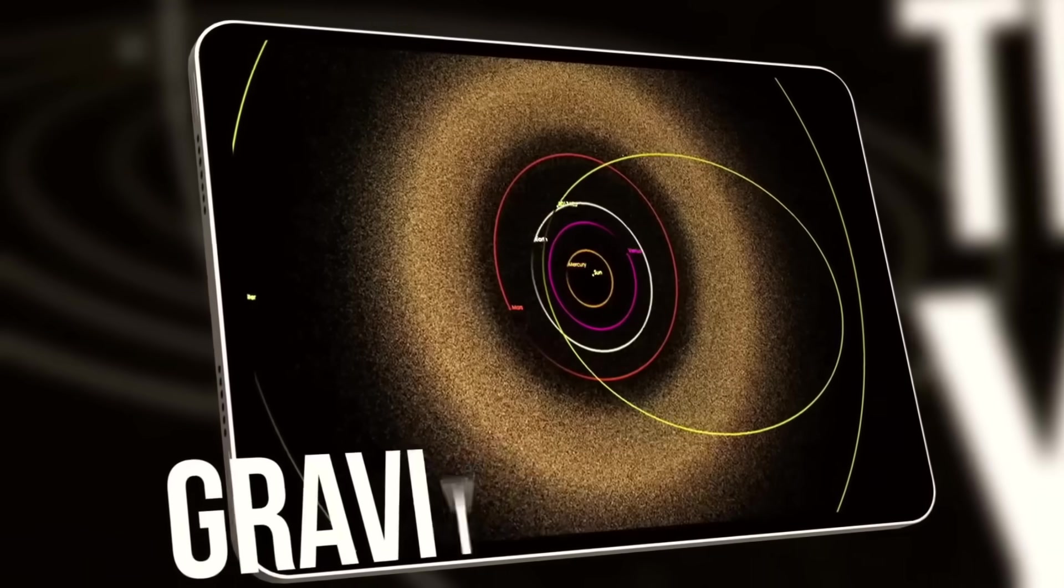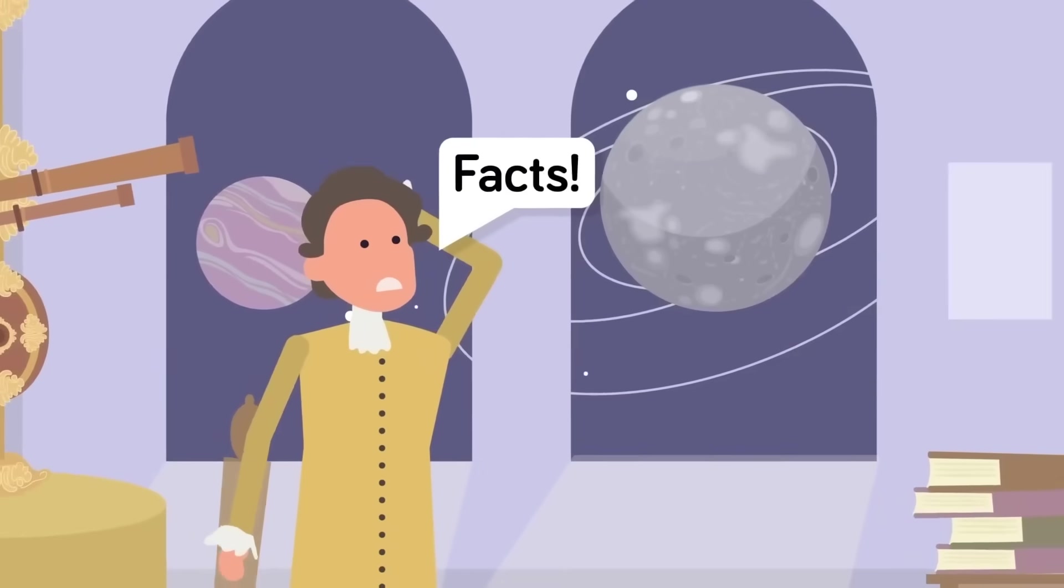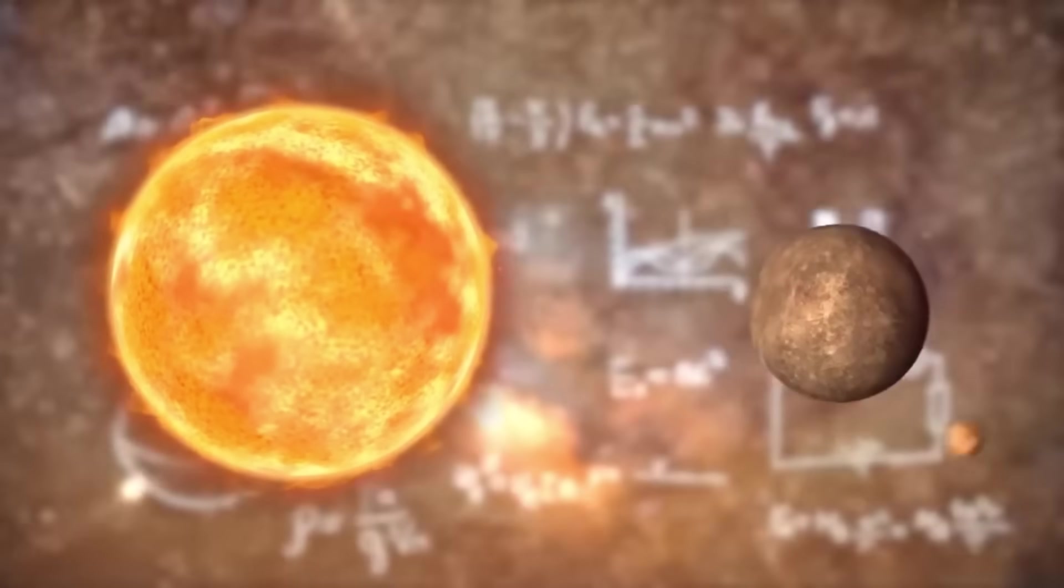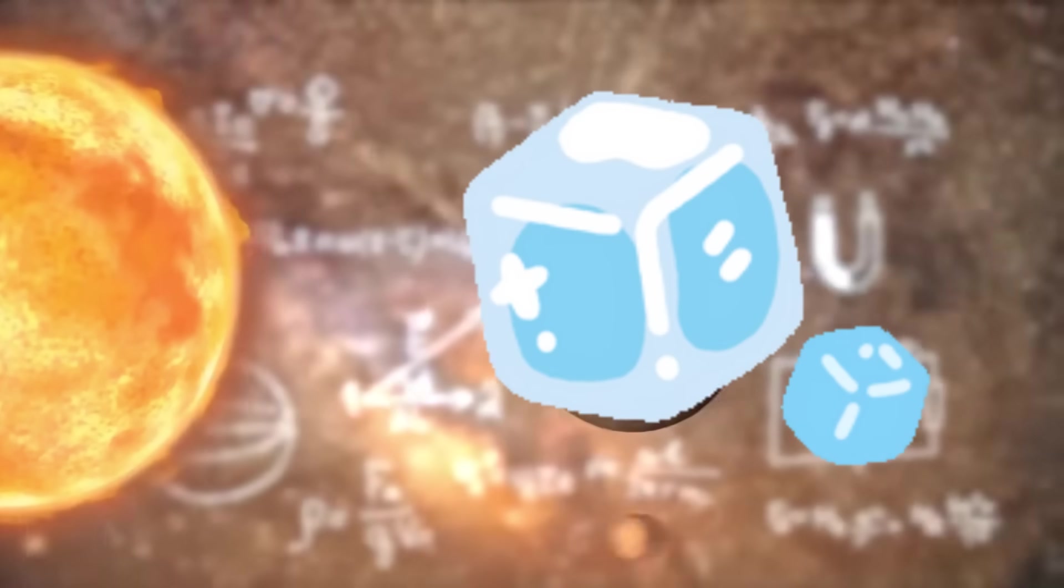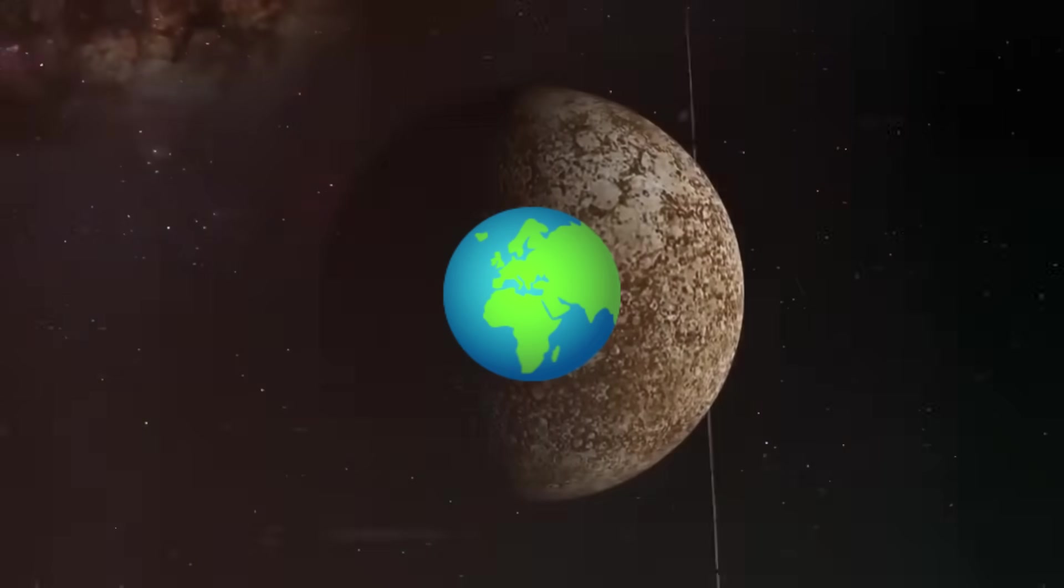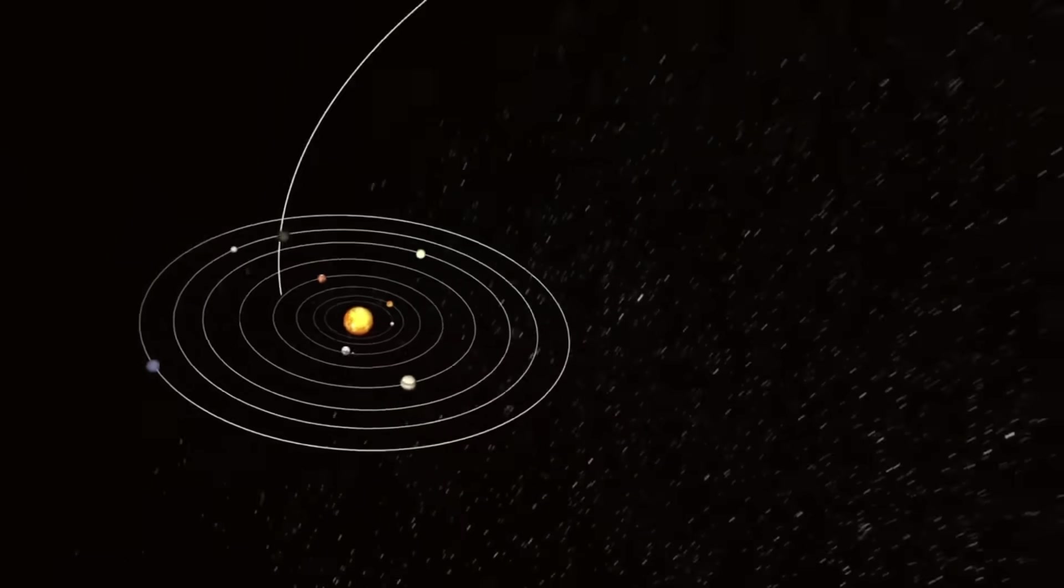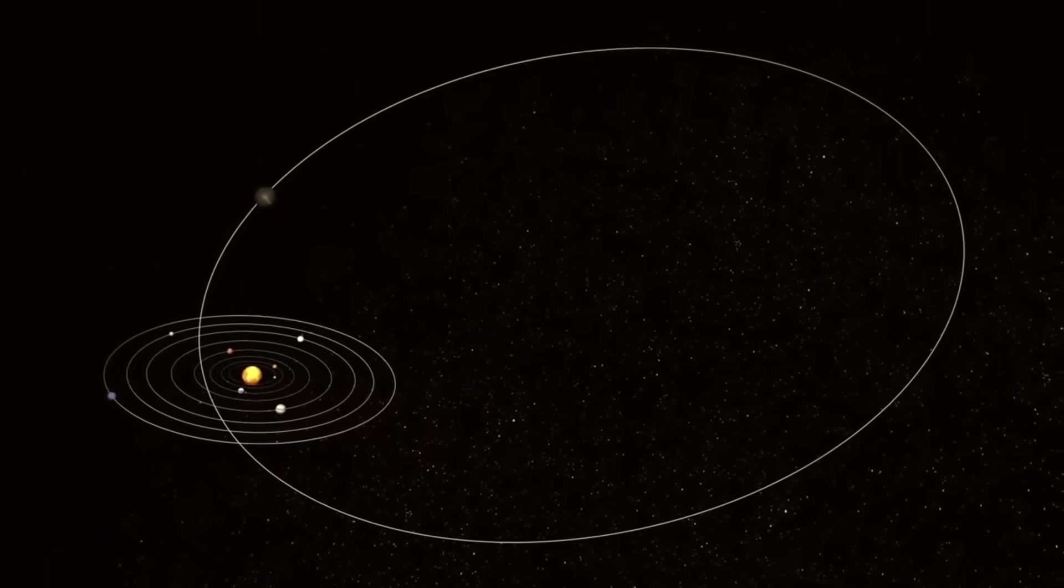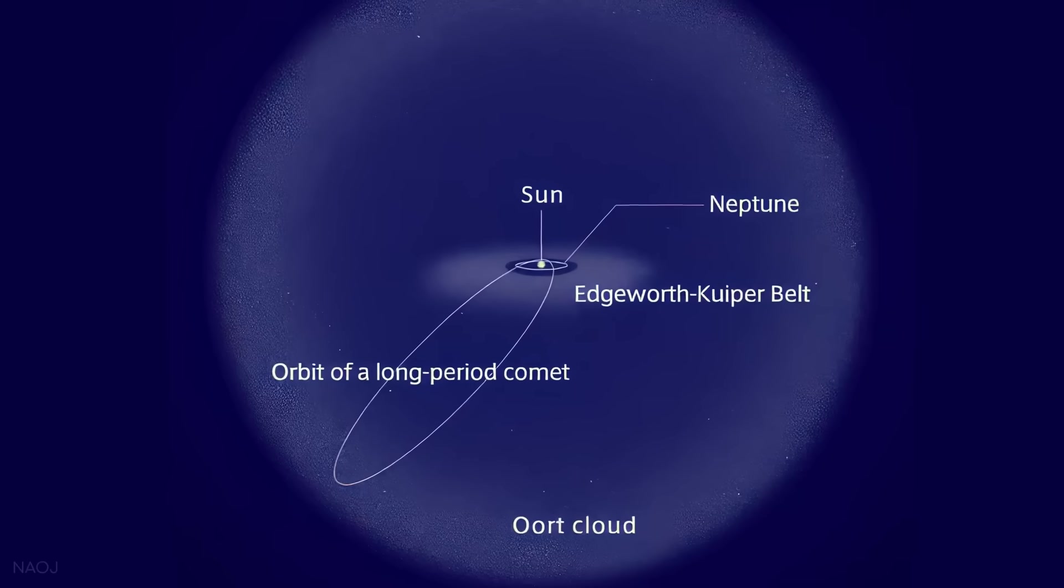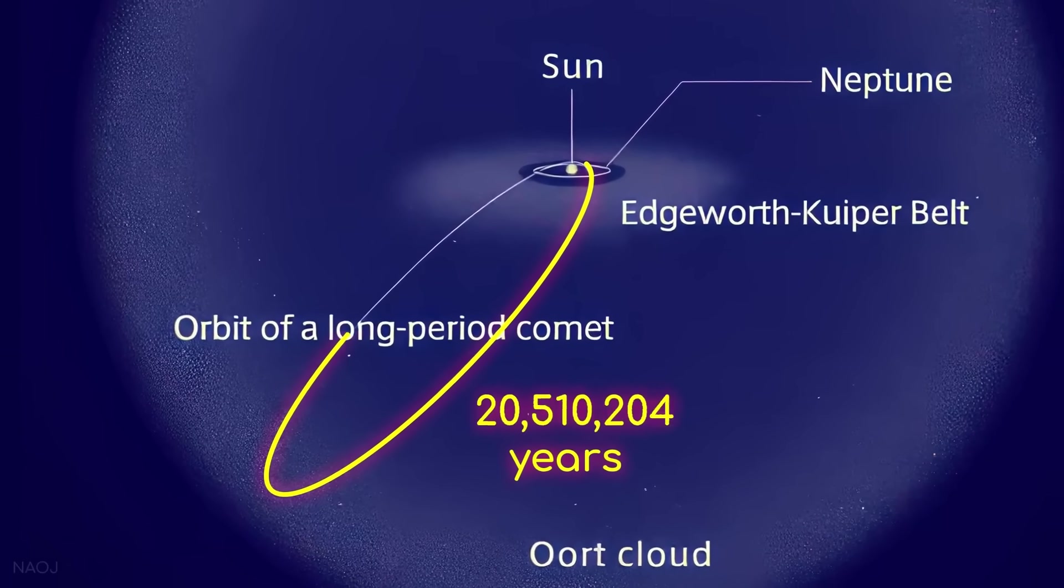Now, what exactly could this mysterious object be? Scientists are currently split between two main theories. Theory A: The object is a conventional planet, a gas giant or an ice giant, somewhere between five to ten times the mass of Earth. Its slow, elliptical orbit takes it far from the sun, which is why it has remained undetected for so long. This theory aligns with the original predictions of Planet Nine, a massive body whose gravity would shape the orbits of countless smaller objects in the Kuiper Belt.